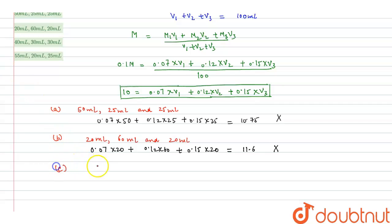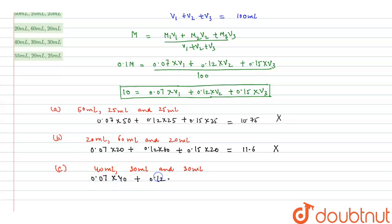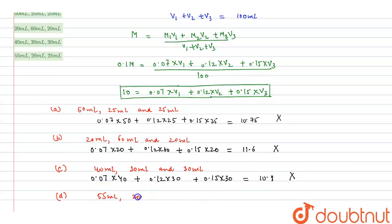For option C, V1=40 mL, V2=30 mL, V3=30 mL: 0.07×40 + 0.12×30 + 0.15×30 = 10.9. This is also not equal to 10, so option C is also incorrect.